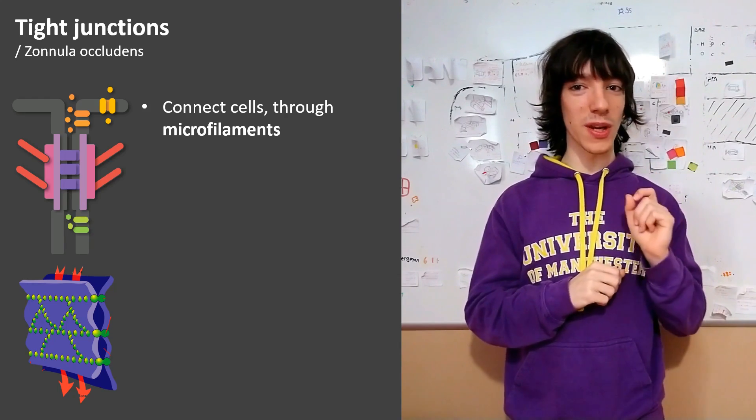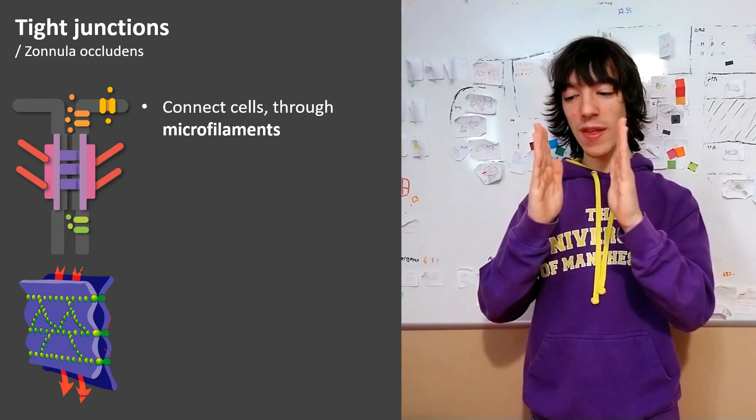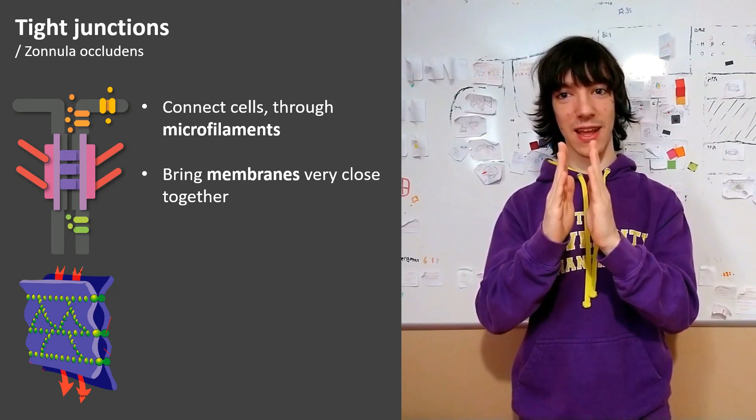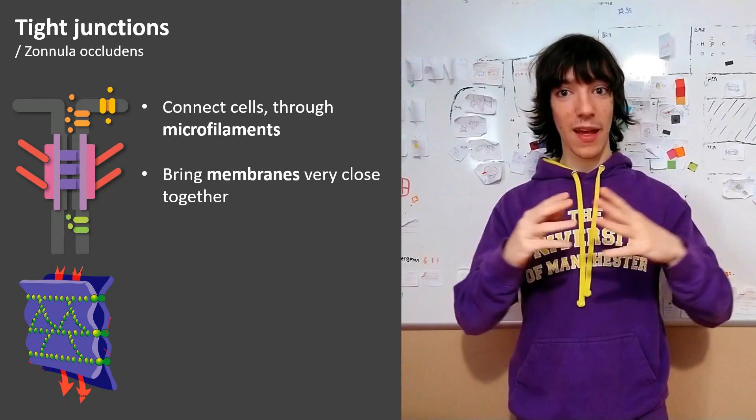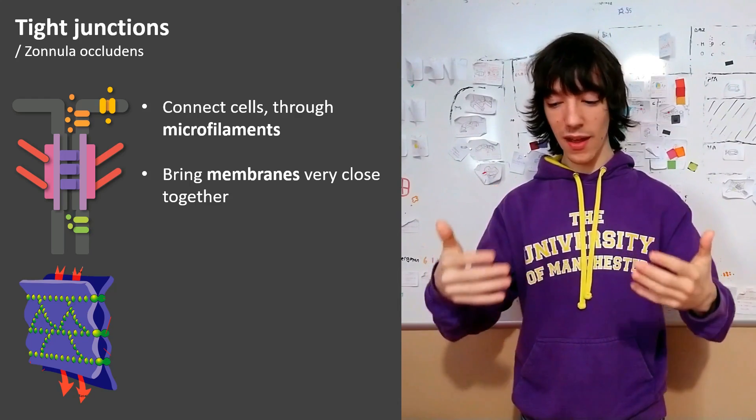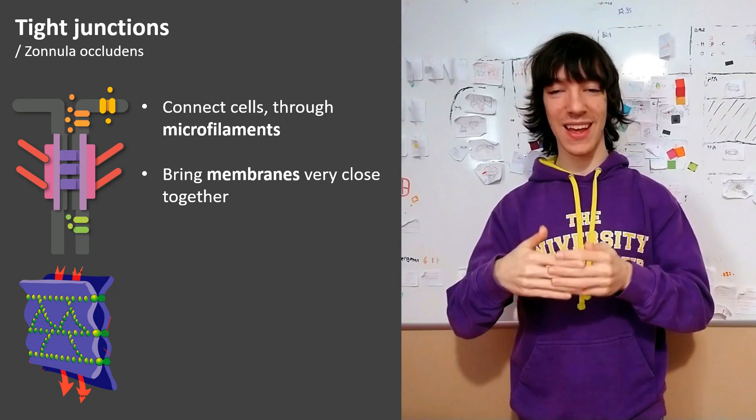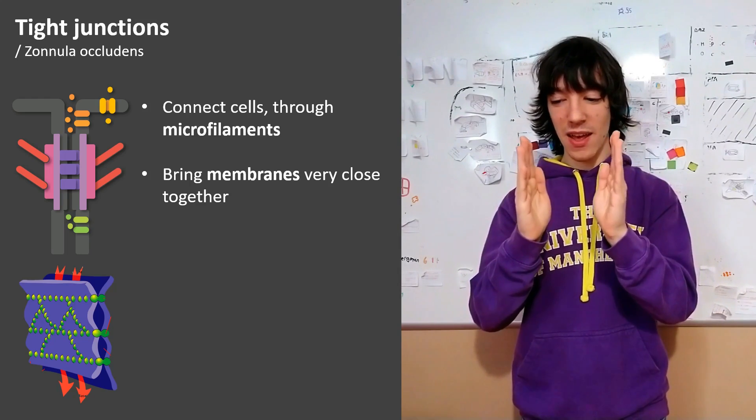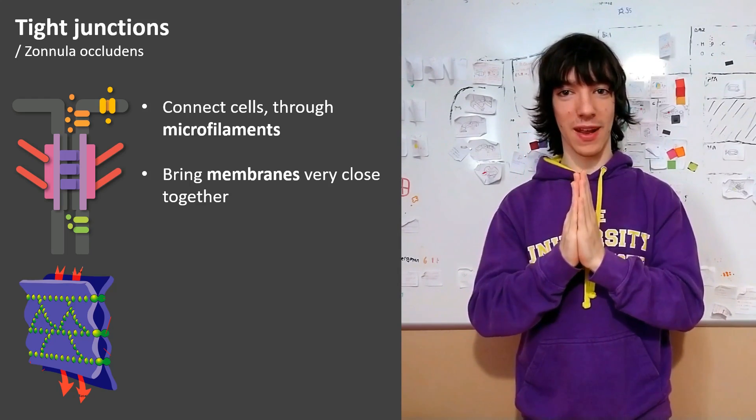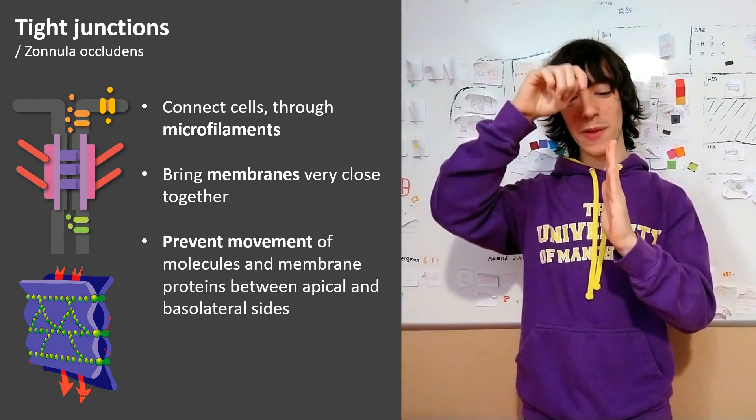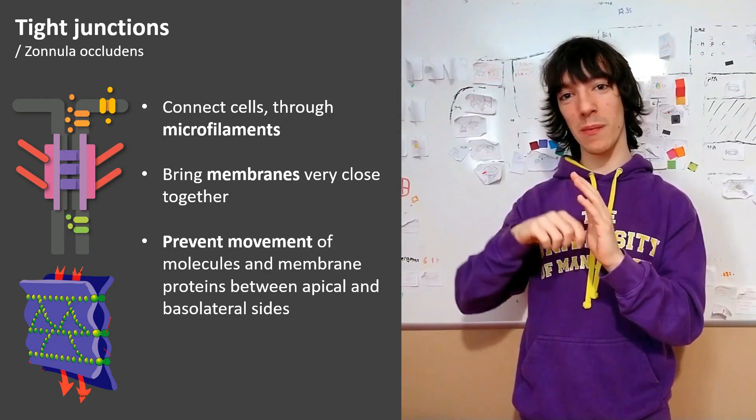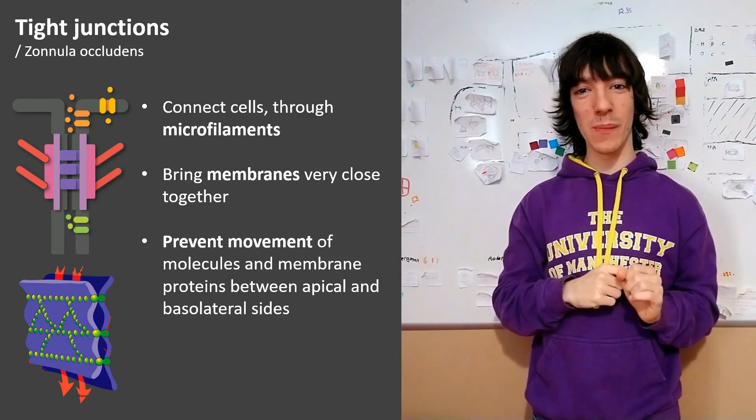What makes tight junctions really special is that they bring the membranes of the cells that they are connecting very close together. Adherens junctions might be stronger, but they also need a bigger area of interaction between the proteins. Tight junction proteins bring the membranes very close together and they block the movement of molecules between the cells or through the membrane of the cells and that's really important.